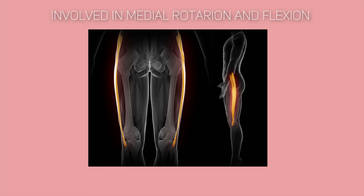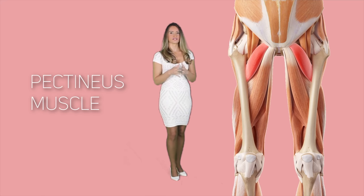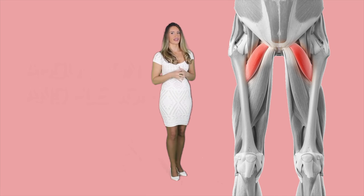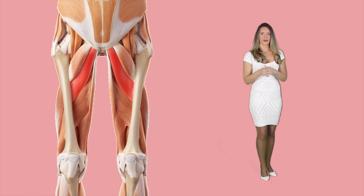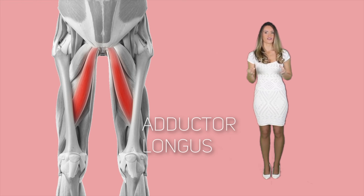Thigh adductors are the last group and contain the pectineus muscle, linking the femur with the pubic spine, and are involved in abduction and flexion of the thigh. A second thigh adductor is the adductor brevis muscle, which is triangular in shape and short, linking the femur with the pubic bone. It is involved in lateral thigh rotation and flexion.